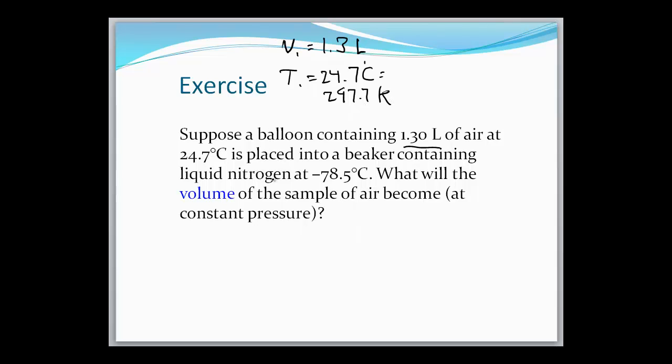It's placed in a beaker containing liquid nitrogen at negative 78.5. So what we're saying here is we've changed the temperature to negative 78.5 degrees Celsius, and that is going to convert to 194.5 Kelvin. So what will the volume of the sample of the air become? All right, so what we have here is volume and temperature, so essentially that's Charles's law.